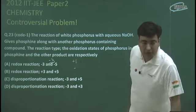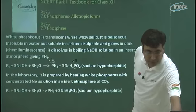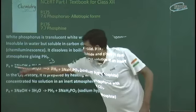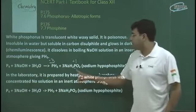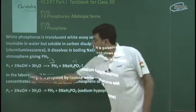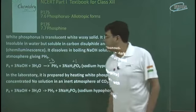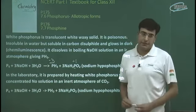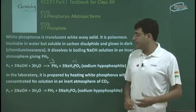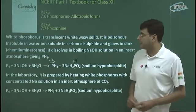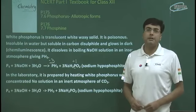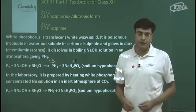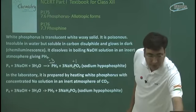We can see the reaction of phosphorus going from 0 to plus 1, which is oxidation, and phosphorus going from 0 to minus 3, which is reduction. So it is a redox reaction, and since the same element undergoes both oxidation and reduction, that means it is a disproportionation reaction.